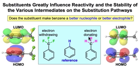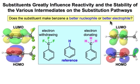Electron donating substituents, such as this methyl group on benzene, have their greatest influence on the highest occupied molecular orbital. In the case of this methyl substituent, it's the electrons occupying the σ bond of this carbon-hydrogen bond that donate in a σ to π* π-type interaction and increase the electron density in the π system of the benzene ring to make it a better nucleophile. In all cases, we're comparing to the reference case where there is no substituent — just a hydrogen atom.